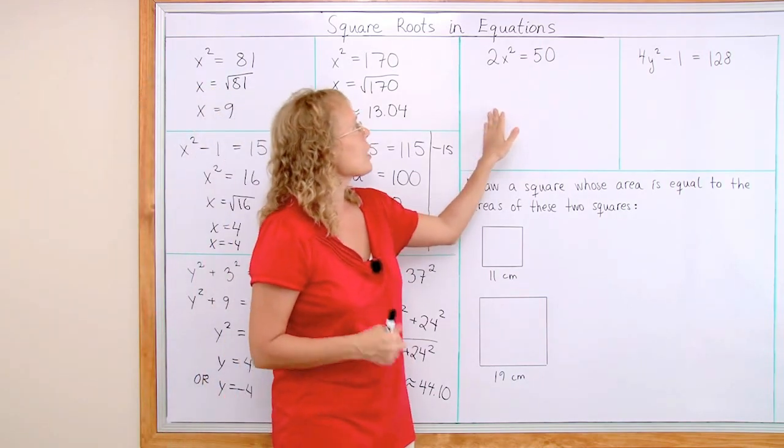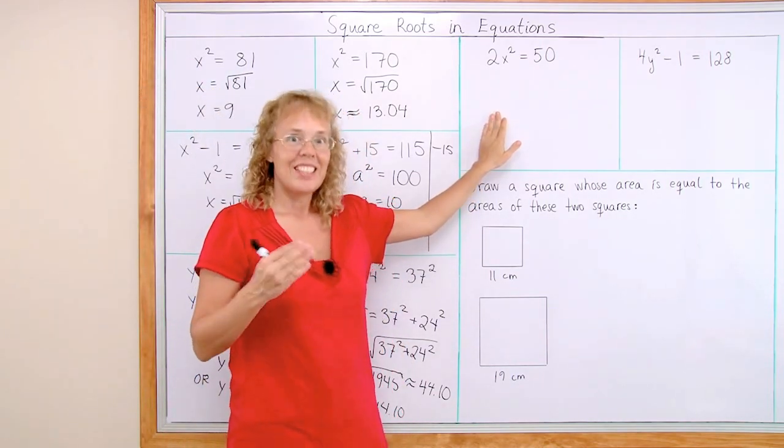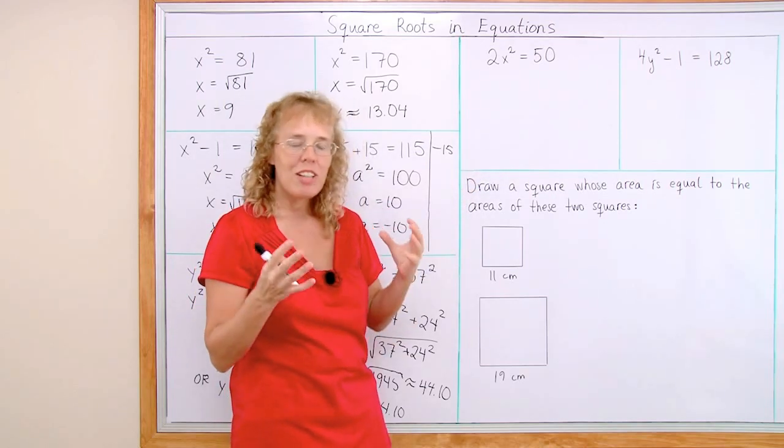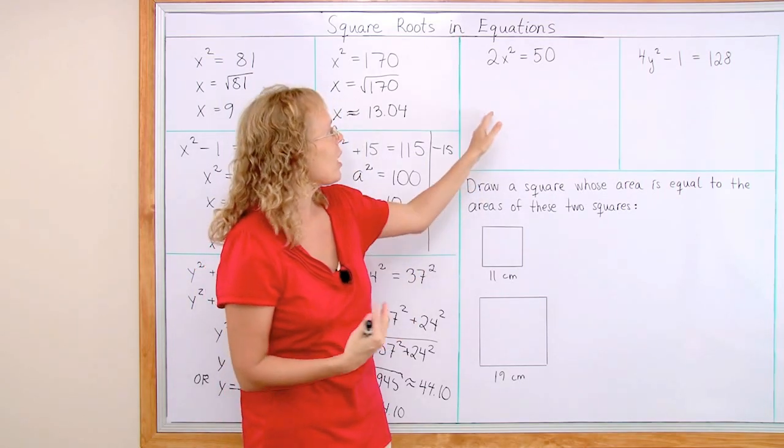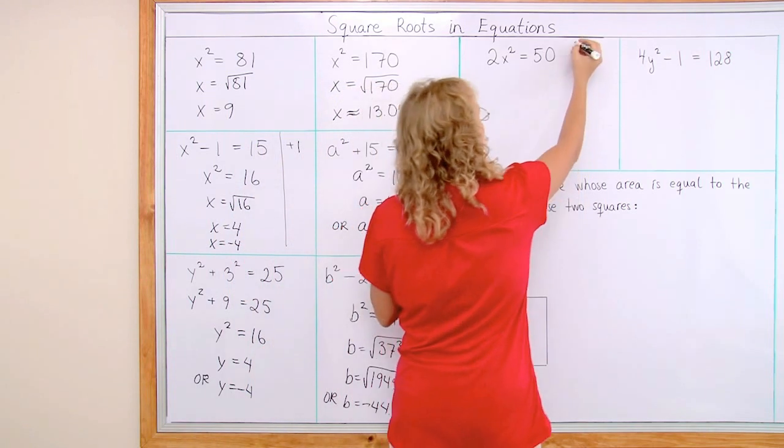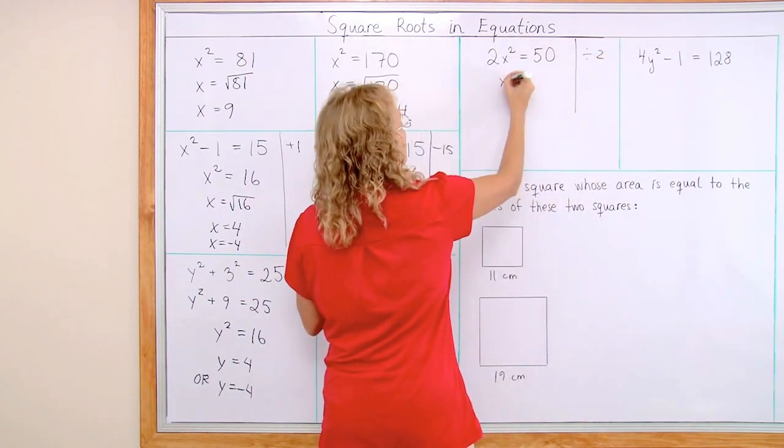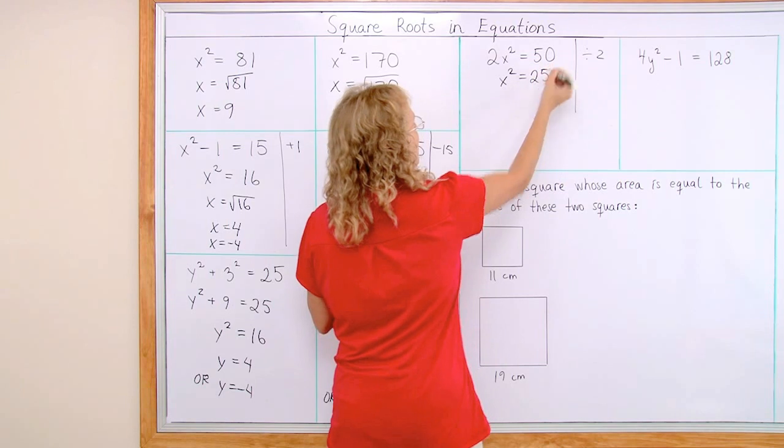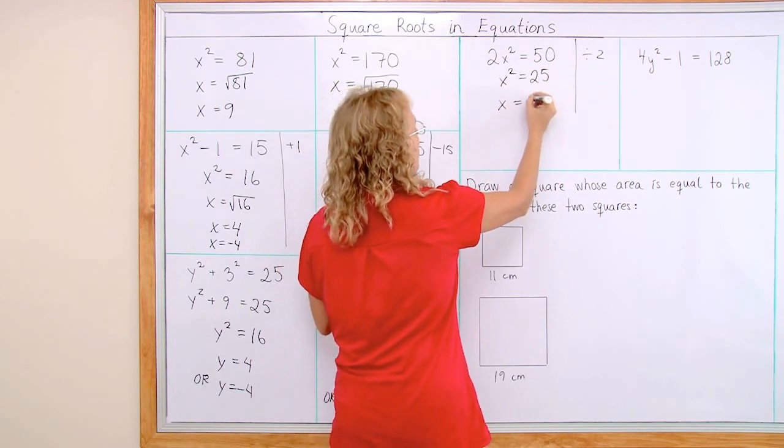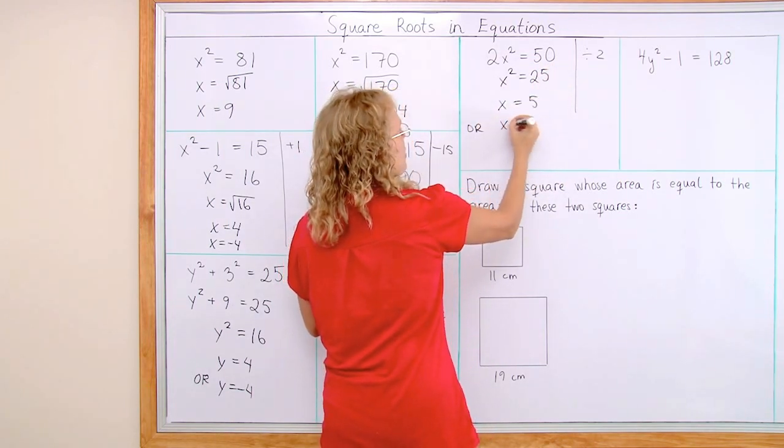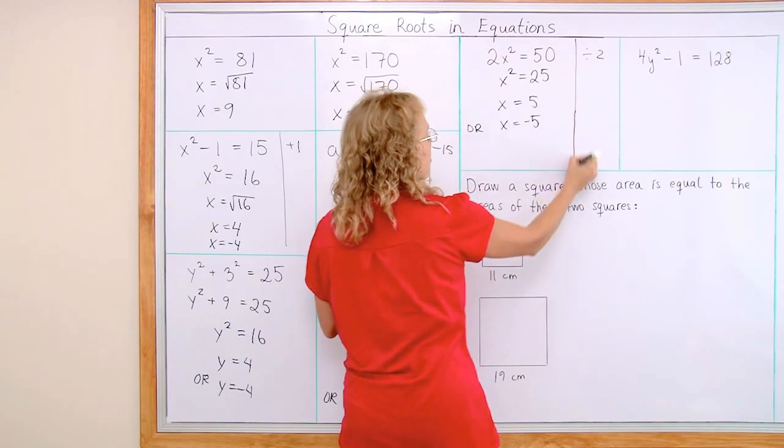So here, 2x squared equals 50. In this equation the principle is the same. I need to have x squared alone on this side. So I divide both sides by 2. And I get x squared equals 25. And then x equals 5. Or the negative solution, x equals negative 5.